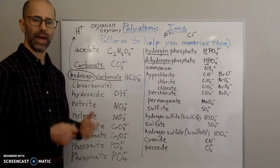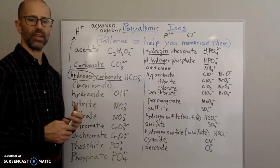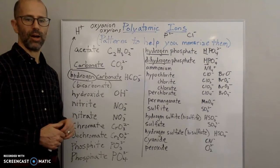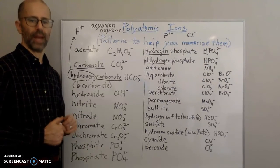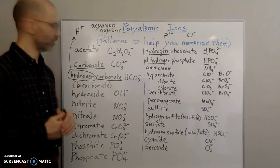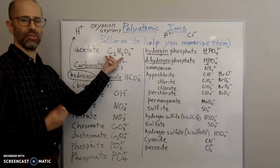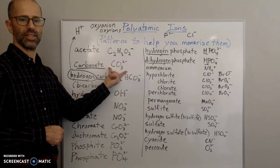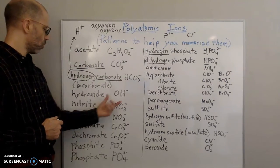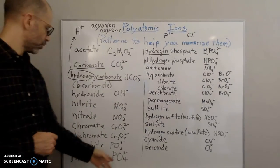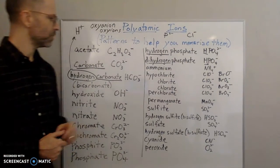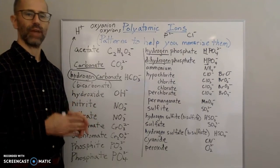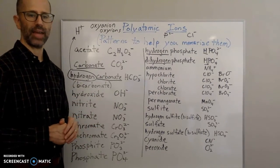So these are just some of the tricks to help you remember the patterns for formulas and charges. This doesn't work for everything on the list of polyatomic ions, but it works for a lot of them. Some you'll just need to memorize — for example, acetate is C2H3O2 with a 1- charge, carbonate is CO3 2-, hydroxide is OH-, and cyanide is CN-. For those, you can use flashcards: formula and charge on one side, the name on the other.